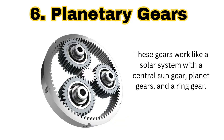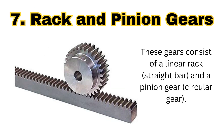The next gear is the planetary gear. These gears work like our solar system — at the center is the sun gear, around that are the planet gears, and on the outside is the ring gear. This is the arrangement of the planetary gear system. Planetary gears are used in automatic transmissions where we are placing a number of gears in a compact space.